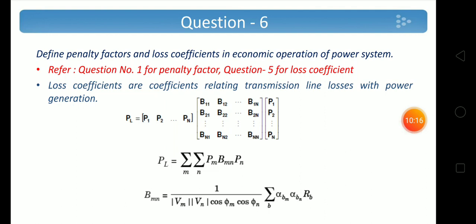Next question: Define penalty factor and loss coefficient in economic operation of a power system. Penalty factor is already explained in question 1. Loss coefficients are coefficients relating transmission line losses with power generation: P_L = P1, P2, etc., expressed using the loss coefficient matrix B_mn. The general form is P_L = ΣΣ P_m·B_mn·P_n, where B_mn = Σ[alpha_Bm·alpha_Bn·R_B]/(V_m·V_n·cos(phi_m)·cos(phi_n)).